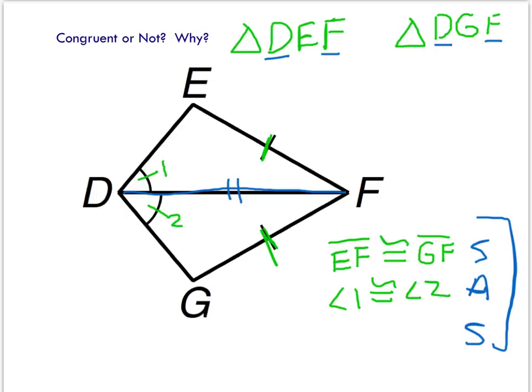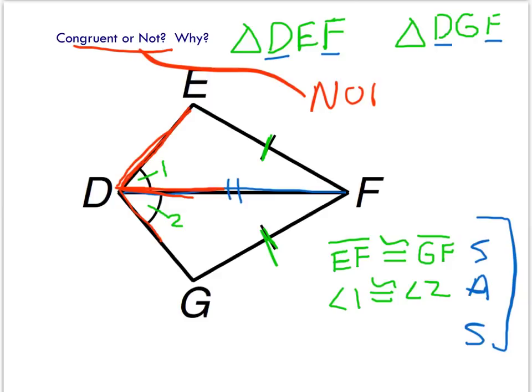A reminder of the definition of an included angle: the included angle must touch both sides that we know about. Angle 1, in order to be used as an included angle, would have to be formed by segment EF — but it's not. That red angle is only made up of the blue shared segment DF. Likewise, angle 2 doesn't touch segment GF. So these triangles might be congruent or might not — we can't prove it. They are not provable.